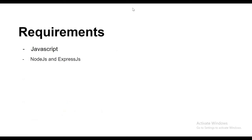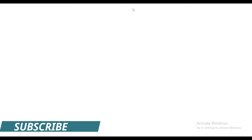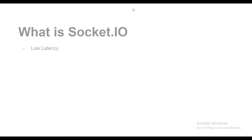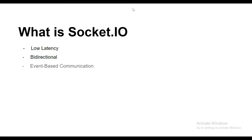To follow the video you must know about JavaScript and have some knowledge about Node.js and Express.js. So what is Socket.IO? Socket.IO is a real-time, bi-directional, low-latency, event-based communication library. It is implemented on different languages including Java, Node.js, Swift, Python, and others.